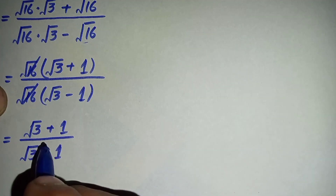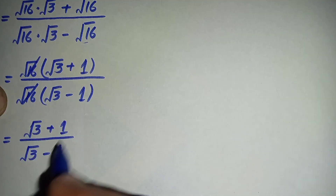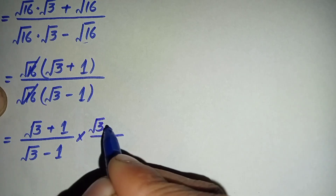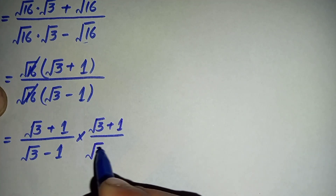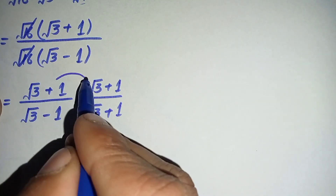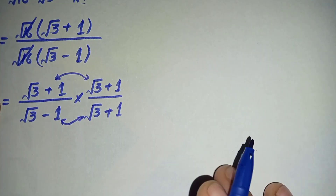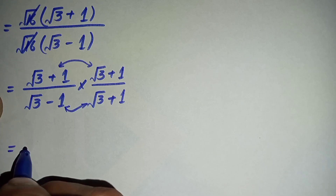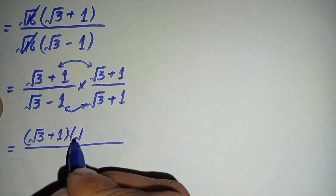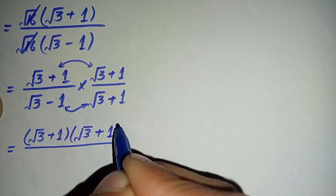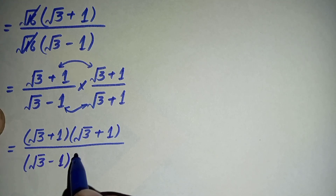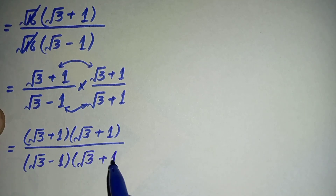Further, we will solve it by rationalization. We will multiply and divide the equation by square root of 3 plus 1. So we multiply the numerator with square root of 3 plus 1 and the denominator with square root of 3 plus 1. This gives us square root of 3 plus 1, times square root of 3 plus 1, divided by square root of 3 minus 1, times square root of 3 plus 1.